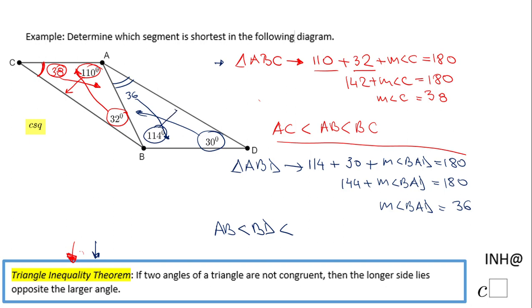The largest side is going to be AD, which goes with 114. Now the only thing we have to do is combine these two inequalities and determine which segment is shortest by comparing the inequalities.